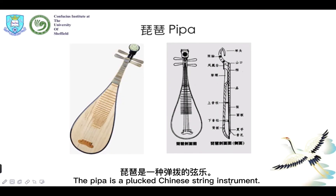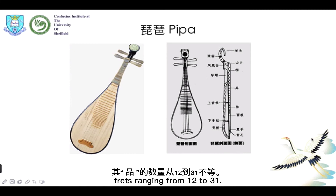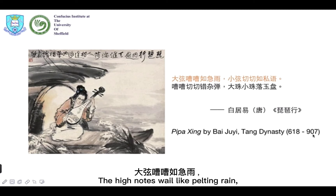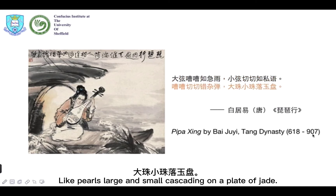The pipa is a plucked Chinese string instrument with a pear-shaped wooden body and a varying number of frets ranging from 12 to 31. An ancient poet described the pipa's sound: 'The high notes wail like pouring rain, the low notes are as soft as whispering. Wailing and whispering interweave, like pearls large and small cascading on a plate of jade.'